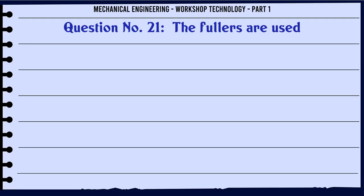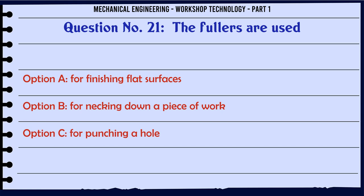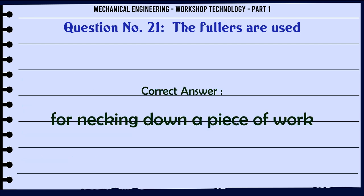The fullers are used: A. For finishing flat surfaces. B. For necking down a piece of work. C. For punching a hole. D. To finish the punched hole. The correct answer is: For necking down a piece of work.